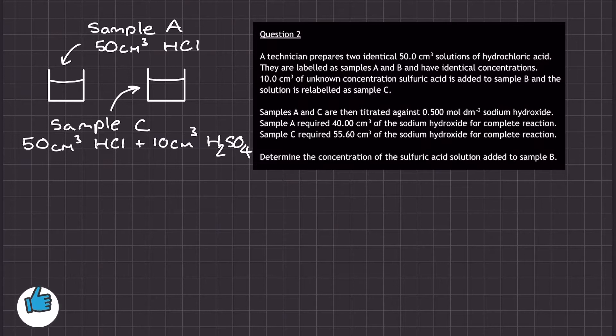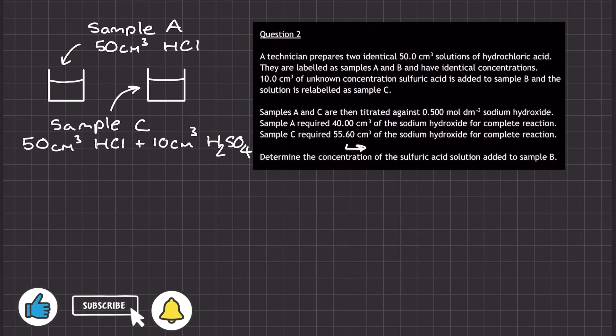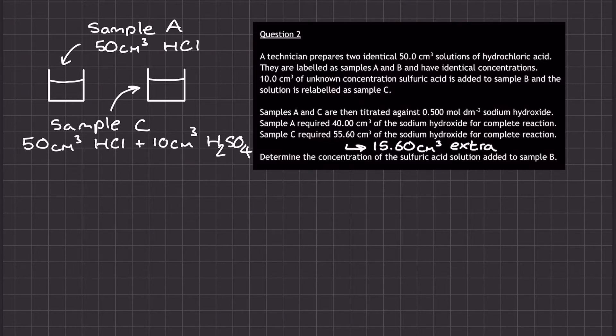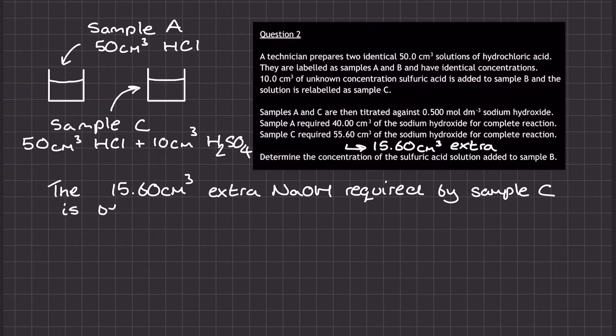We have to use the information about sodium hydroxide to determine this. Both samples, A and C, are titrated against the 0.5 mol per decimeter cubed sodium hydroxide solution. Sample A, which was just hydrochloric acid, required 40 centimeters cubed of the sodium hydroxide, whereas sample C required 55.60 centimeters cubed of the sodium hydroxide solution. That's 15.60 centimeters cubed extra, and that 15.6 centimeter cubed extra is just because of the sulfuric acid that was added to the second solution.